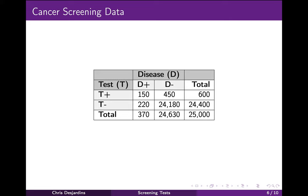What we really want to know is not how sensitive the test is, but how likely is it that we really have cancer if we tested positive. The positive predictive value, also known as PPV, of a test is the proportion of people who tested positive who actually have the disease. In this study, there were a total of 600 people who tested positive. Of these, only 150 really had cancer, so the PPV is 150 divided by 600, or 25%. Only a quarter of the people who tested positive actually have the disease. The other 75%, 450 people, are false positives.